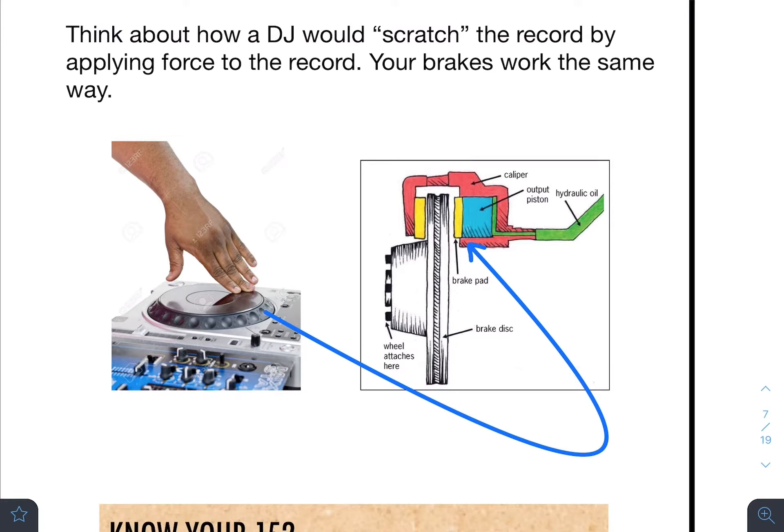Because if we make this record player vertical, that's going to be this brake disc over here. And the DJ, or the amount of pressure that they're putting, we are going to be putting this onto here.